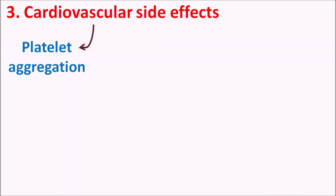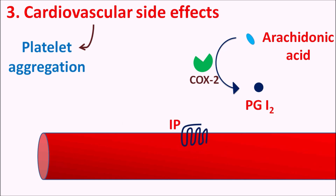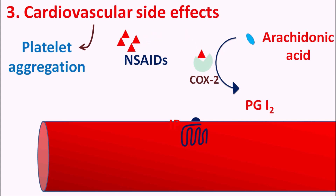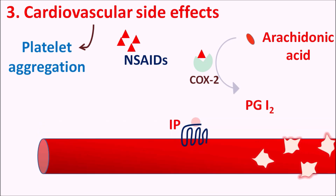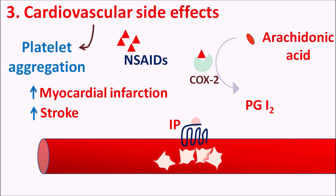NSAIDs can also increase platelet aggregation, and COX-2 plays an important role here. Arachidonic acid is converted into prostaglandin I2 (PGI2) by COX-2 enzyme. PGI2 acts as a vasodilator on IP receptors expressed on vascular endothelium, producing vasodilation and reducing platelet aggregation. In the presence of NSAIDs, the COX-2 pathway is blocked, inhibiting synthesis of PGI2, resulting in vasoconstriction which promotes platelet aggregation. On chronic use, NSAIDs increase platelet aggregation by inhibiting COX-2, raising the risk of myocardial infarction and stroke. This is more pronounced with COX-2 selective NSAIDs such as celecoxib and piroxicam.